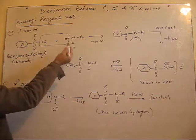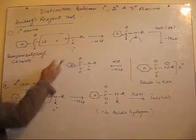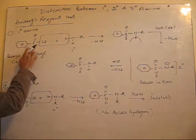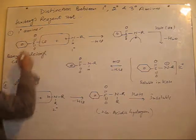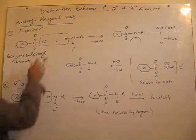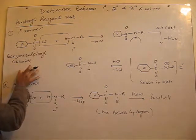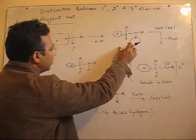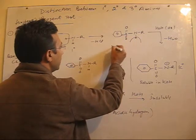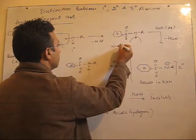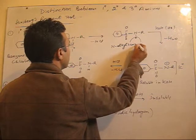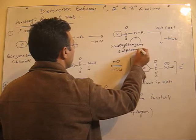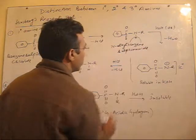In this test, amines are treated with benzene sulfonyl chloride. Taking the example of a primary amine: when a primary amine reacts with benzene sulfonyl chloride, as a result of loss of HCl, they form N-alkyl benzene sulfonamide.